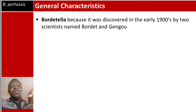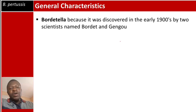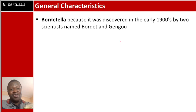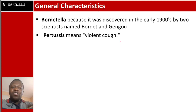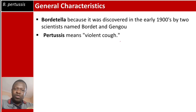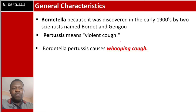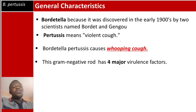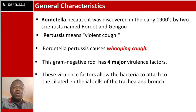The name Bordetella pertussis comes from two scientists named Bordet and Gengou who discovered it in the early 1900s — Bordet got the better part of the name. 'Pertussis' means violent cough, so this bug Bordetella pertussis causes a violent cough known as whooping cough.